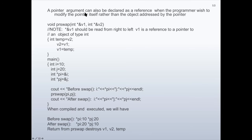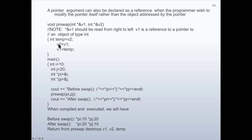A pointer argument can also be declared as a reference when the programmer wishes to modify the pointer itself rather than the object addressed by the pointer. The function is named ptr_swap. It has two parameters: v1 is a reference to a pointer to integer, and v2 is the same type. Note that this should be read from right to left: v1 is a reference to a pointer to an object of type integer. Inside the function, temp is assigned v2, v2 is assigned v1, and v1 is assigned temp — a classic swap.